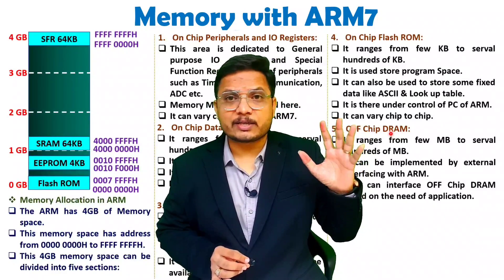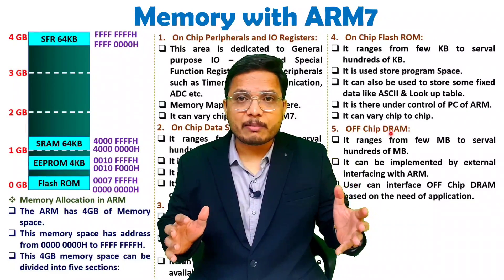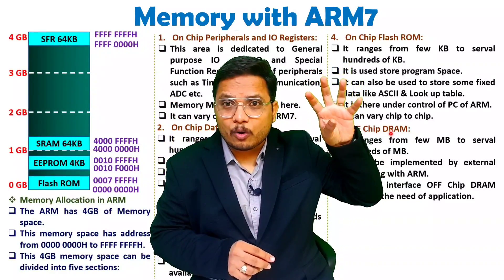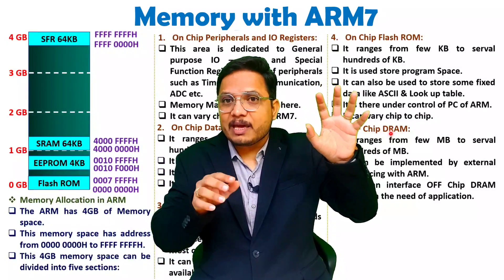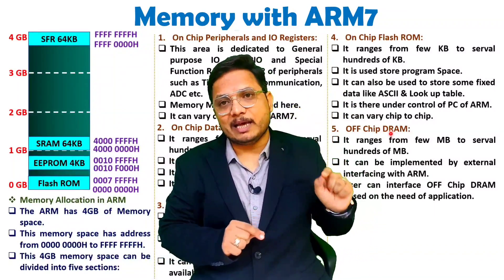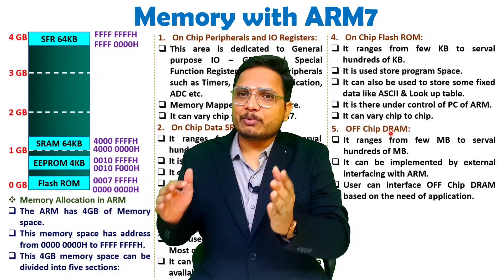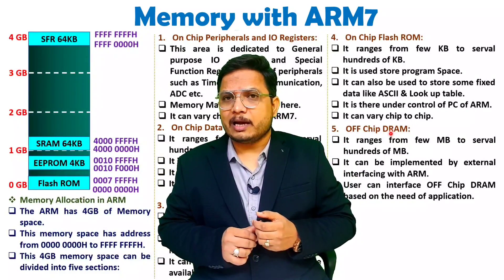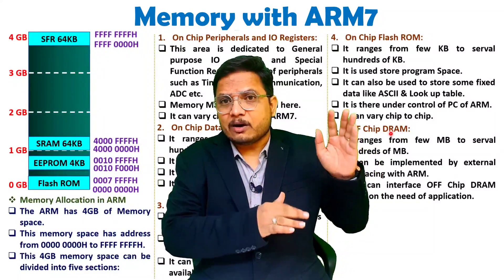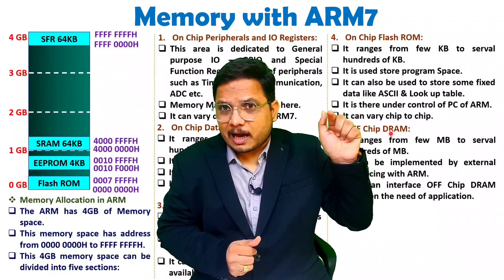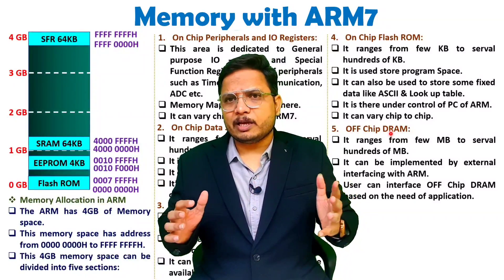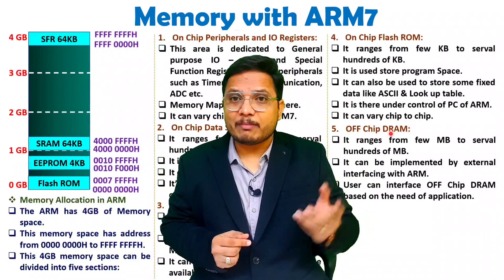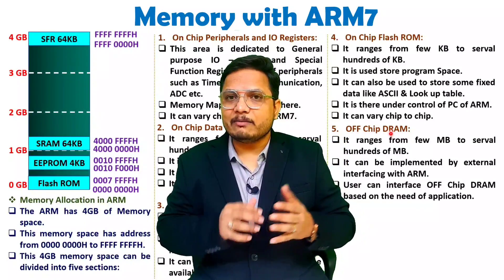So, these are the five different sections in terms of memory interface and on-chip memory with ARM7. When we talk about any embedded system, inside there will be an ARM core, but the application provider may have many features, and based on that, on-chip memory will be there. The ARM7 TDMI is used in a wide variety of embedded systems — you can find this on various ARM provider websites. You should have basic knowledge that memory is not fixed; it will vary with respect to the chip.